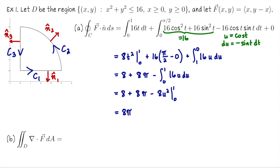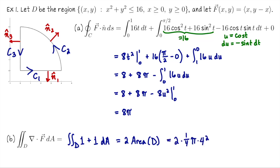Now let's compute the right-hand side: the divergence of F integrated over the quarter disk. The divergence of F = (x, y-x) is ∂x/∂x + ∂(y-x)/∂y = 1 + 1 = 2. So the double integral over D is twice the area of D. Since D is a quarter disk of radius 4, that's 2 × (1/4)π(4²) = 8π. As expected, both sides are equal.